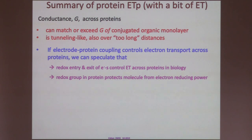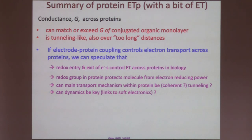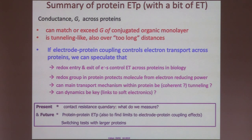So we have this conductance that can exceed that of a conjugated monolayer, organic monolayer, tunneling-like. And if the electron-protein coupling is the controlling factor, we can speculate that it's the redox entry and exit of electrons that controls electron transport across proteins in biology, which puts into question some of the importance of measurements that only look at what's happening inside the protein. And the redox group in the protein is extremely important because when an electron is injected, this is a disaster for a biological system because it's such a strong reducing agent. So having a redox group is the parking place. And that's where it's parked until the oxidized species comes to fix it up. And now the question is if that main transport mechanism inside the protein can be actual coherent tunneling, and in how far can dynamics be the key?